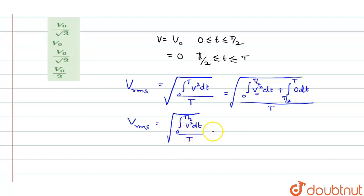V²dt becomes V₀²dt, and applying the limits gives V₀² · (T/2) / T. This whole thing is under the square root.